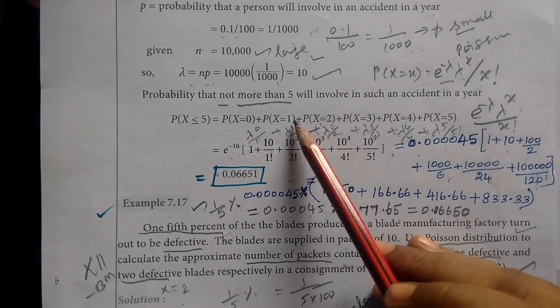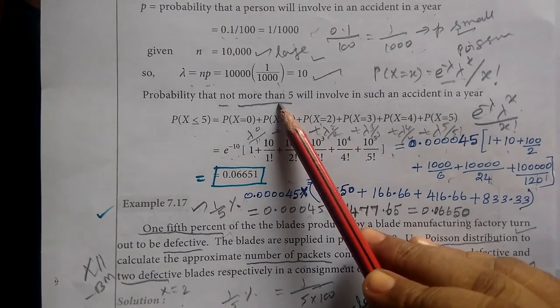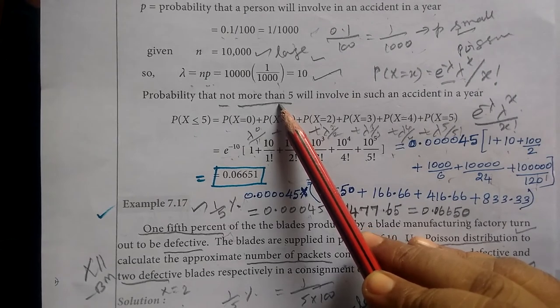The question is not more than 5, which means less than or equal to 5, so we start from 0.